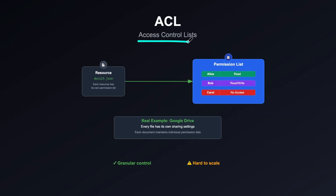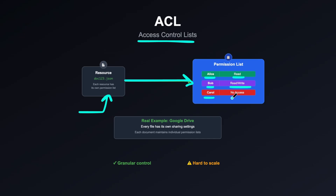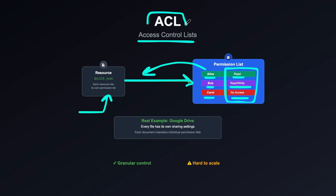The third common type is access control lists. Instead of role-based or attribute-based access, you have an access control list for a specific resource. For a resource like a document or JSON file, you maintain a permission list specifying which users can access it. For example, user Alice has read access only, user Bob has both read and write access, and another user has no access to this document. ACLs are highly specific and user-centric, which makes them hard to scale in systems with millions of users or objects unless carefully managed.